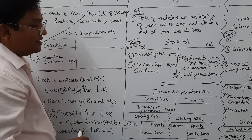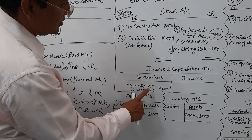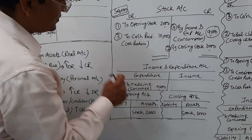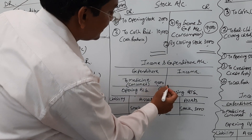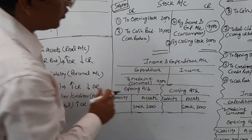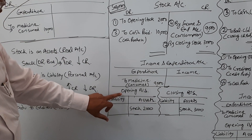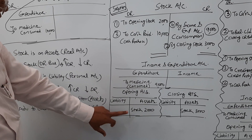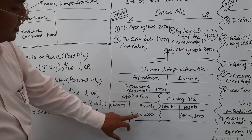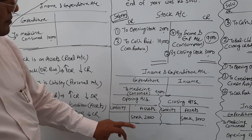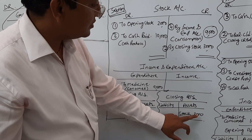In the income and expenditure account, the debit side shows: to medicine consumed 9,000. For the balance sheet, we draw both opening and closing balance sheets. Opening stock 2,000 appears on the asset side of the opening balance sheet. Similarly, closing stock 3,000 appears on the asset side of the closing balance sheet.